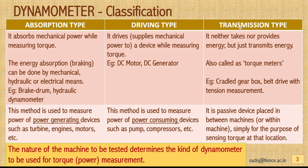The third category is transmission type dynamometers. These neither take nor provide energy but simply transmit energy from one device to another. They are also called torque meters. Examples include a cradle gearbox connected between two devices, or a belt drive with belt tension measurement. When power transmission happens, one side will have tension and the other will be slack, allowing torque at that location to be identified. It is simply a passive device placed between or within machines for the purpose of sensing torque.